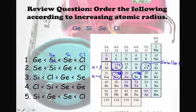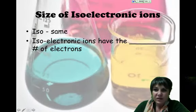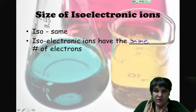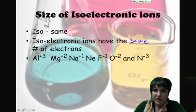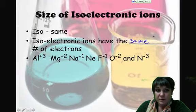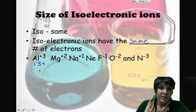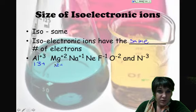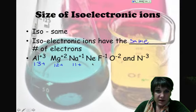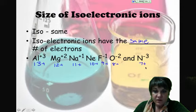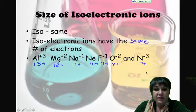That works too. Let's look at the size of isoelectronic ions, which means they have the same number of electrons, and they may or may not have the same number of protons. Aluminum has 13 protons, because on the periodic table its atomic number is 13. Magnesium has 12 protons, sodium is number 11, neon is 10, fluorine is 9, oxygen is 8, and then nitrogen is 7. So we know how many protons they have based on their atomic number.